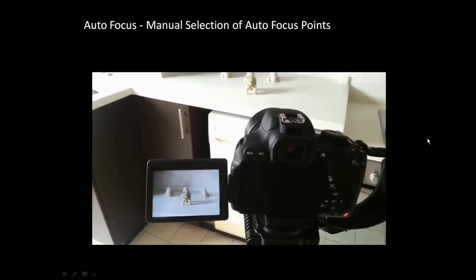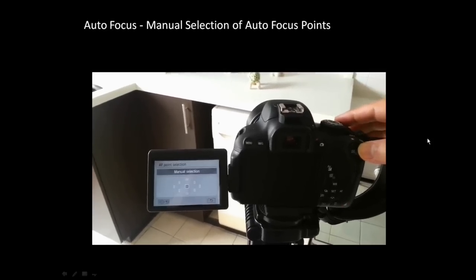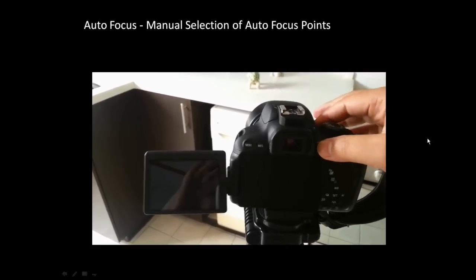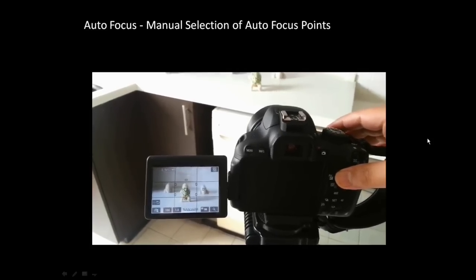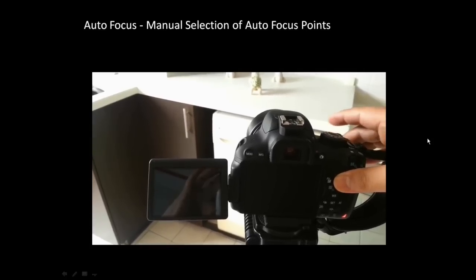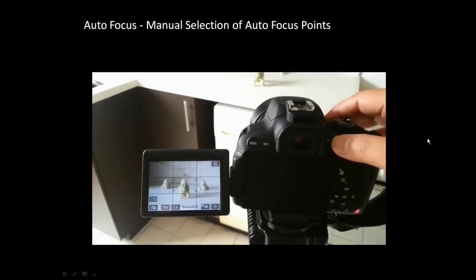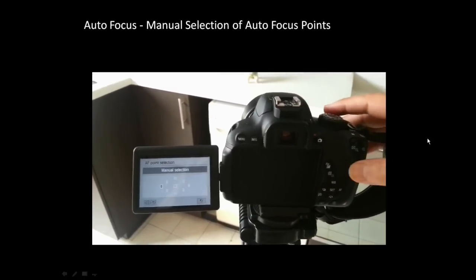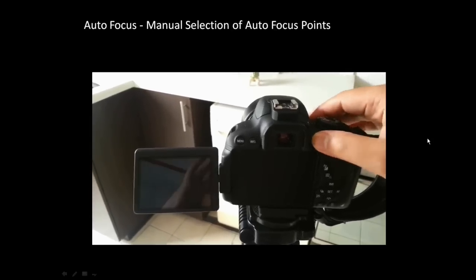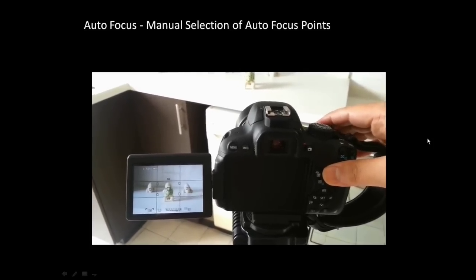Now if I want to focus on the leftmost object, I go to the selection option, select the leftmost autofocus point, and half-press the shutter — it focuses on the leftmost object. In a similar way, if you want to focus on the rightmost object, press this button, select the rightmost focus point, half-press the shutter, and it will focus on the rightmost object. You can then take the picture.